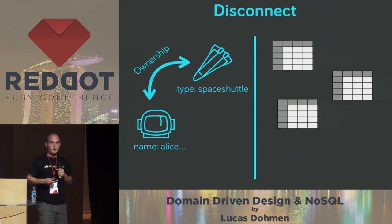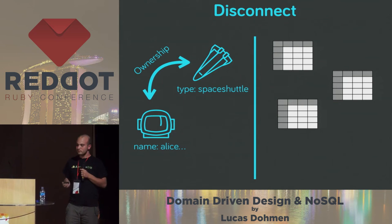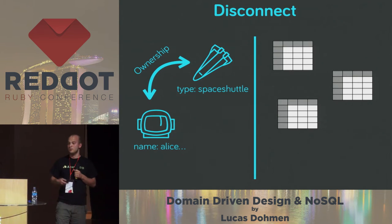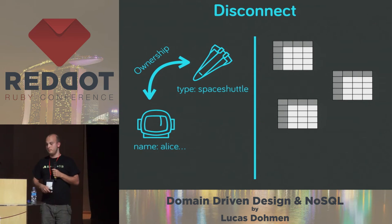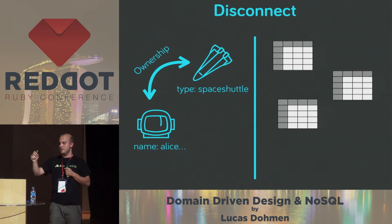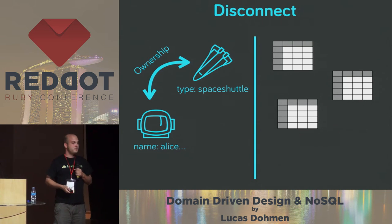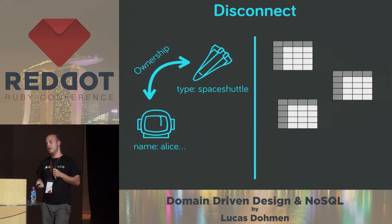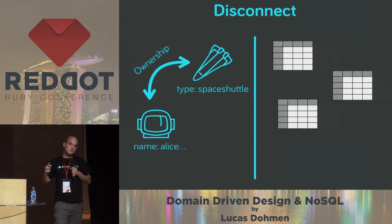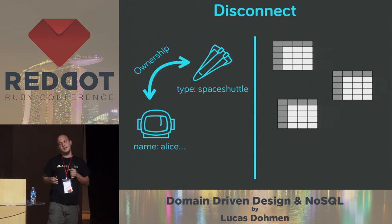We have one problem, and this is a huge disconnect. We have a domain world, and in this domain world we say that Alice owns a spaceship. This might be a diagram that someone draws to explain what the domain is about — they would say, here is Alice, here is a spaceship, and they are connected to each other with an arrow. And then there is the database person that says, of course, then I will have three tables. And every person that doesn't know SQL will probably be confused. This is the disconnect this talk is about.